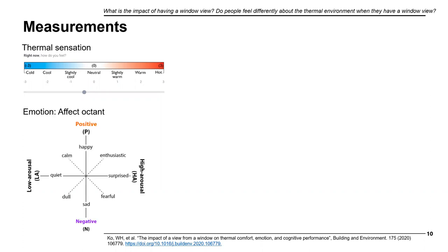For emotion measurement, we used the circumplex model, a well-established emotion measure in social psychology, also called the Affect Octant. It has two axes: one from negative to positive valence, and the other from low to high arousal. The combination of these two axes creates eight different emotion measures. We chose about three adjectives to represent each octant and asked how participants felt at the moment across all eight measures.